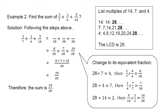Convert each fraction using LCD 28. For 2/7: 28÷7=4, so 2×4=8, giving 8/28. For 1/4: 28÷4=7, so 1×7=7, giving 7/28. For 5/14: 28÷14=2, so 2×5=10, giving 10/28. Now add: 8 plus 7 plus 10 over 28 equals 25/28. The answer is 25/28.